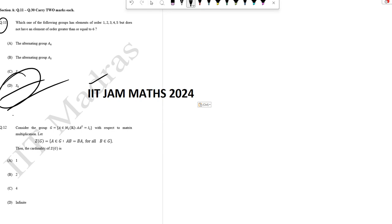Hello dear students, I have solved question number 12. Consider a group G with respect to matrix multiplication. Let Z(G) be the center of G, then the cardinality is what we need to find. The center Z(G) consists of scalar matrices.